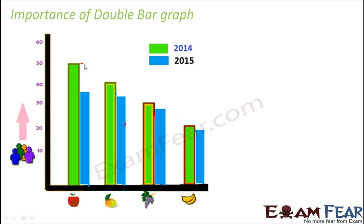For apple, the liking has reduced by a significant amount. For mango, the liking has reduced by only a small amount. For grapes, the liking has reduced by only a slight amount. And for banana, the liking has also reduced by a small amount. So the reduction in liking is maximum for apple. Using this double bar graph, you can very easily compare the data of 2014 and 2015 with each other.